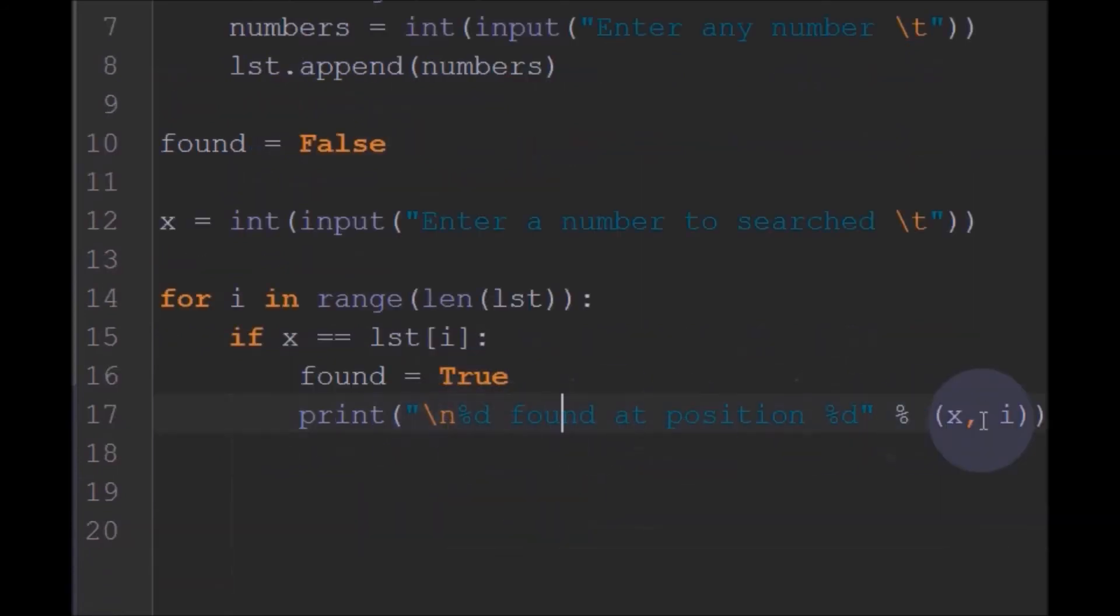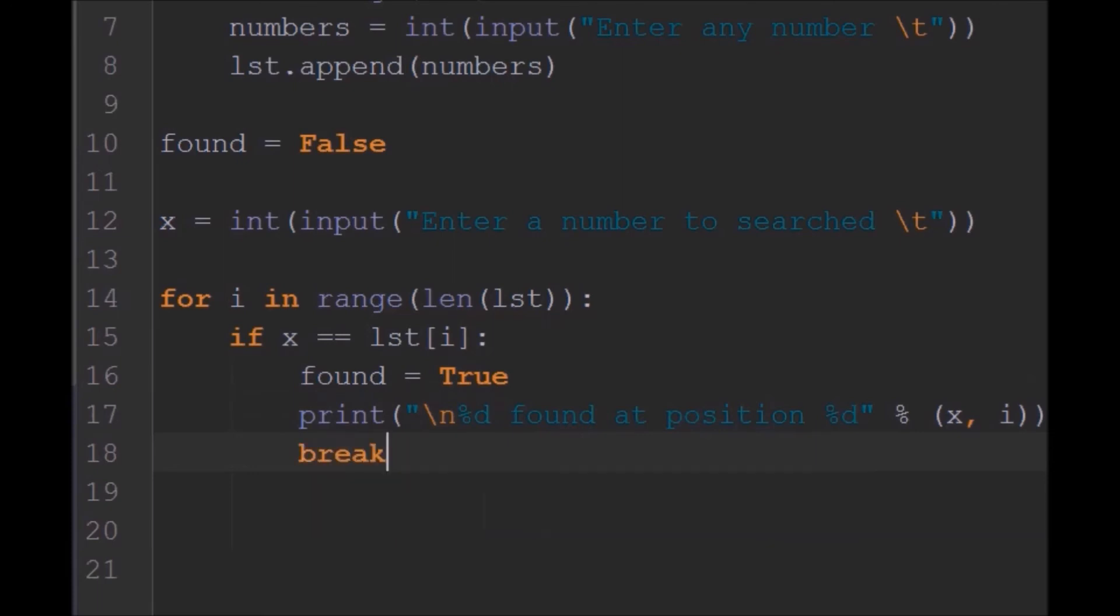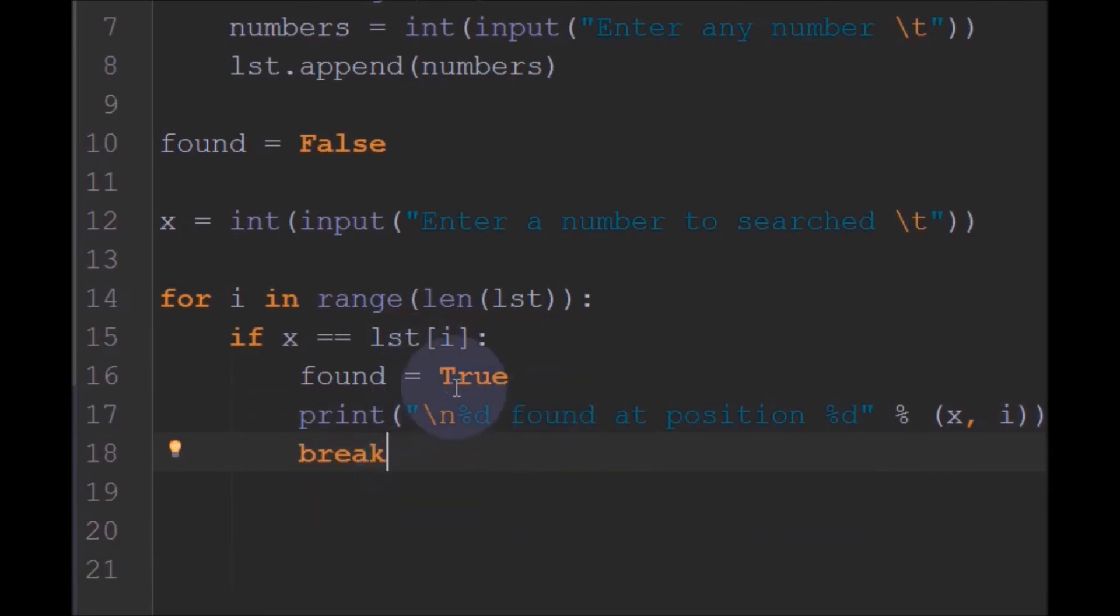And I will also print the element is found at this position. I mean the element which I have entered is found at the position. And we need to also break the loop, so that the loop will break and it will not continue further because we have found the element.